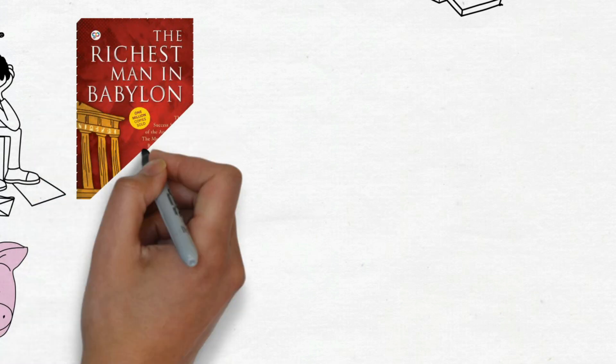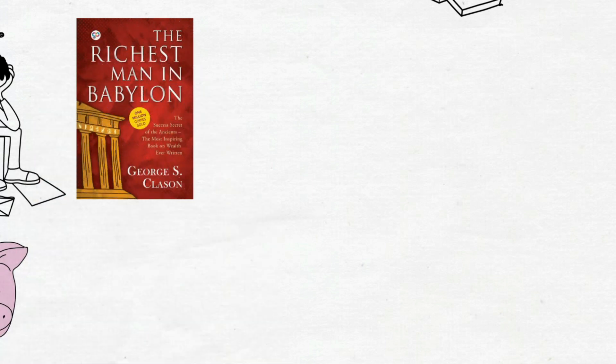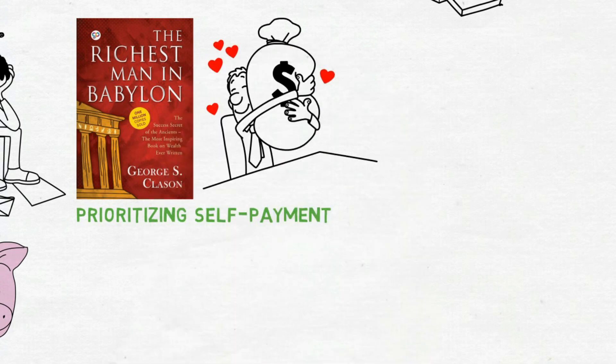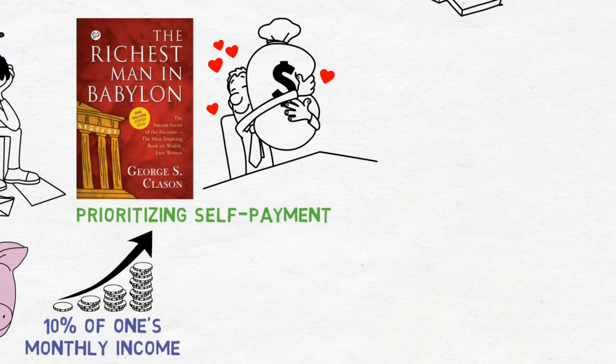The Richest Man in Babylon, a renowned book, has popularized the concept of prioritizing self-payment as a fundamental principle for wealth attainment. The book advocates directing 10% of one's monthly income towards personal savings, facilitating gradual growth over time.